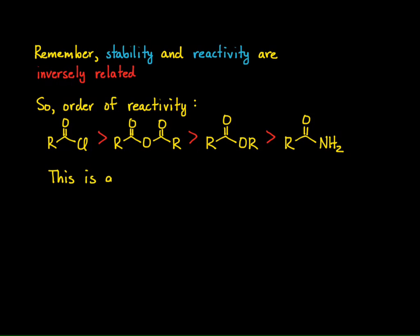This is very good to memorize: acid chlorides, anhydrides, esters, amides. If you can repeat that a few times, you'll know which ones are going to be more reactive and which ones are going to be more stable.